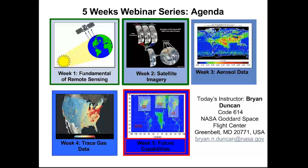Today we have Dr. Brian Duncan, a scientist at NASA Goddard Space Flight Center in the Atmospheric Chemistry and Dynamics branch. He is also a member of NASA's Applied Health and Air Quality Applied Science Team. He has long experience and has done extensive work on trace gases and air quality applications.